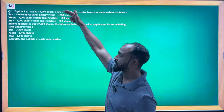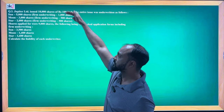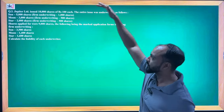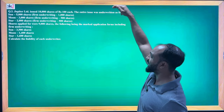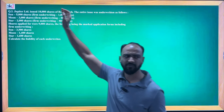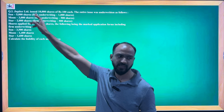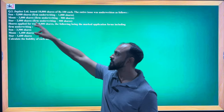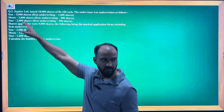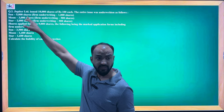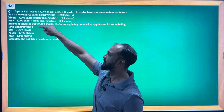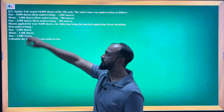Jupiter Limited issued 10,000 shares of Rs. 100 each. The entire issue was underwritten as follows by Sun, Moon, and Star. These are their gross liabilities, with firm underwriting amounts given in brackets. So the gross liabilities include firm underwriting figures for each underwriter.